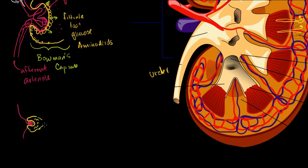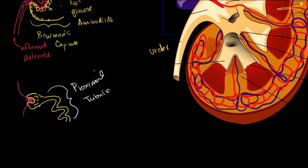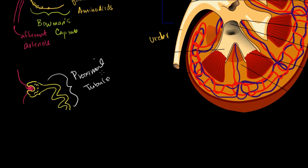Now the filtrate is ready to go to the proximal tubule. Proximal just means 'near,' and tubule means a small tube — so it's a small tube near the beginning of the nephron. The whole thing is often called the proximal convoluted tubule, because it's all convoluted. It's curvy in two dimensions here, but actually curvy in three dimensions. There's a curvy part and then a straight part near the end of the proximal tubule.